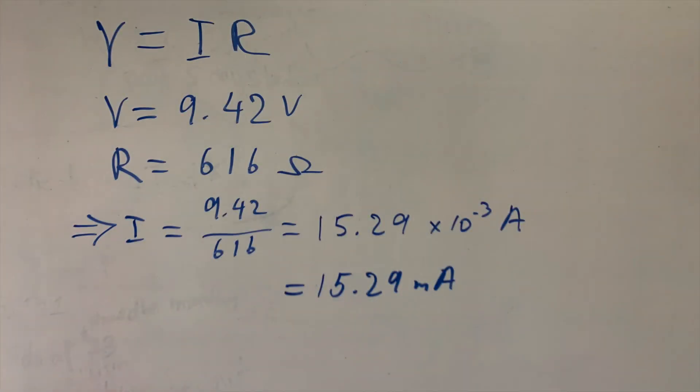The calculation is fairly simple. We're using Ohm's law, V equals IR. We know the voltage drop and we know the resistance. We divide voltage by the resistance. We get 15.29 milliamps.